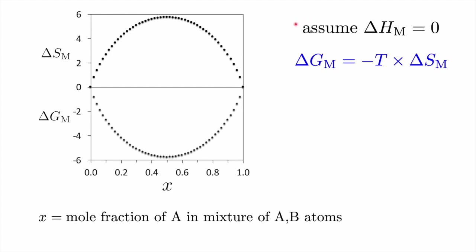If we also assume that the enthalpy of mixing is zero, then the free energy of mixing is simply minus the temperature times the change in the entropy of mixing, and that will obviously go through a minimum when the concentrations of A and B are equal.